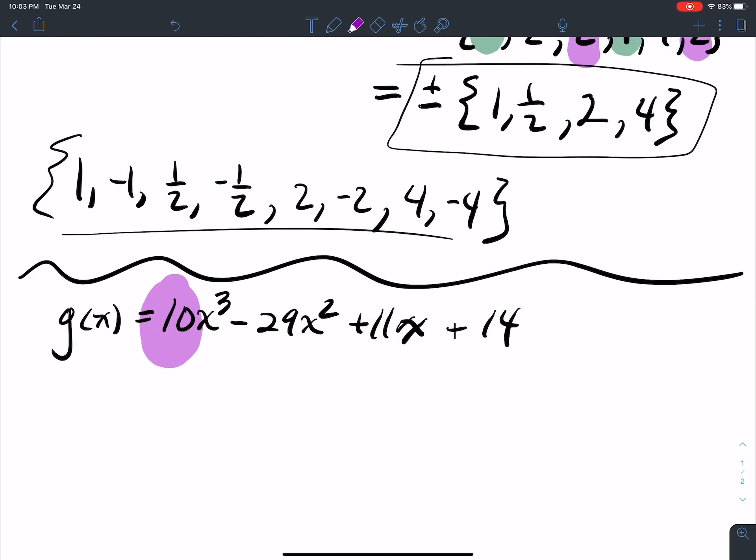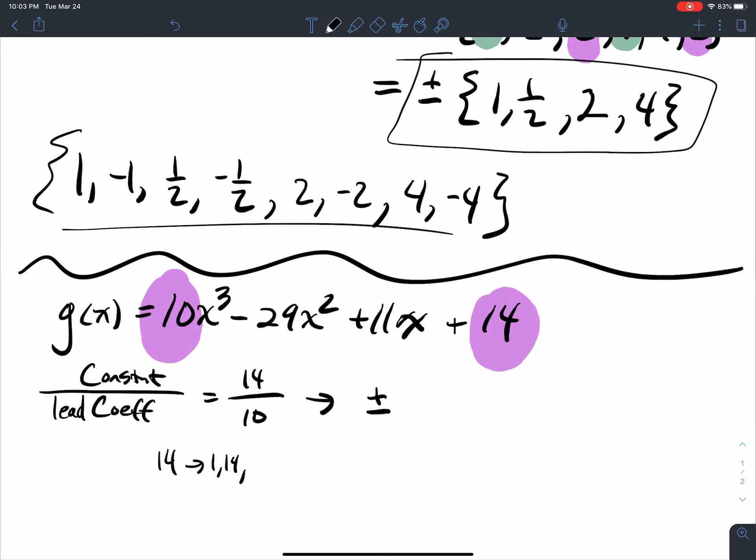To get our list built, I need to look at the coefficient in a lead term and then the constant. So the constant is 14. On the bottom, I have the lead coefficient 10. So things that I multiply to get 14. Well, I can multiply 1 and 14. I can multiply 2 and 7. I think that's it. So in the numerator, what do I have? I've got 1, 2, 7, and 14. In the denominator, 10, I can do 10 and 1, and I can do 2 and 5, and that's it. So 1, 2, 5, and 10.